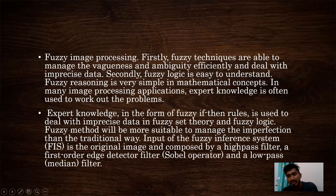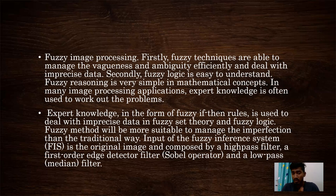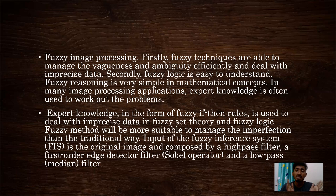Regarding fuzzy image processing: firstly, fuzzy techniques are able to manage vagueness and ambiguity efficiently and deal with imprecise data. Secondly, fuzzy logic is easy to understand — fuzzy reasoning is very simple in mathematical concepts. In many image processing applications, expert knowledge is often used to work out the problems. Expert knowledge in the form of fuzzy if-then rules is used to deal with imprecise data. In fuzzy set theory and fuzzy logic, fuzzy methods will be more suitable to manage imperfection than the traditional way. The input of the fuzzy inference system is the original image, composed by a high-pass filter, a first-order filter, and a low-pass filter.